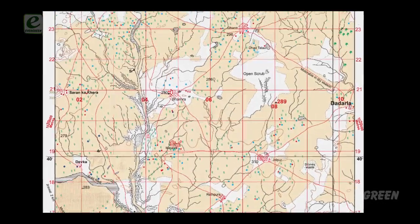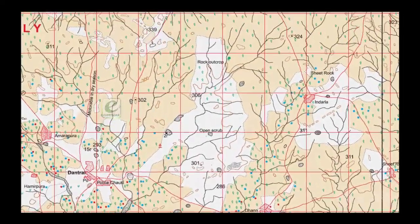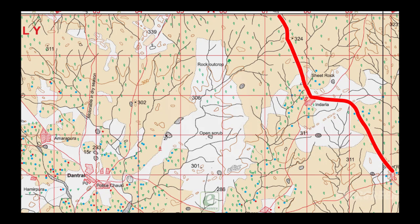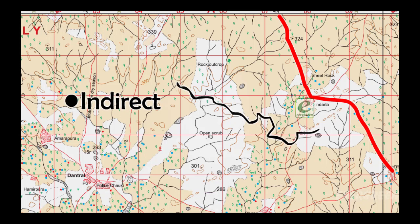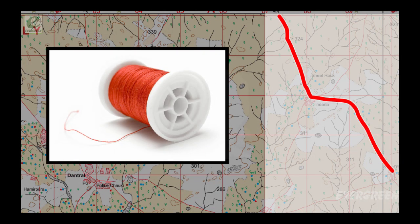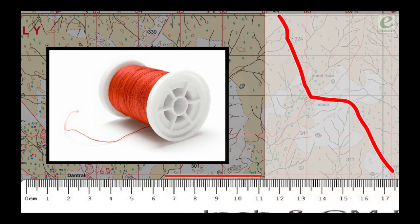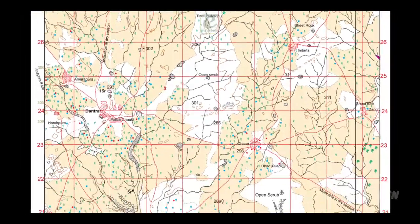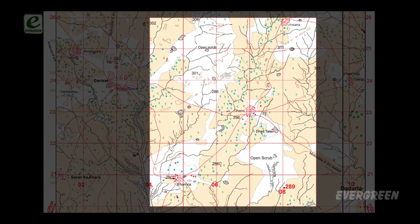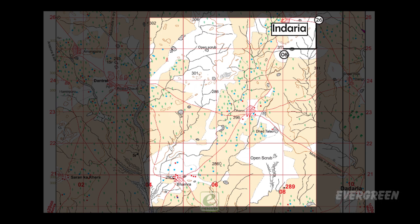Some difficulty arises in measuring irregular or curved lines, so we use the indirect method. To measure a curved line, take a piece of thread, mark the starting point with a pen, spread the thread along the line following each curve to the last point, then stretch the thread along the scale to get the length. For example, to measure the distance along the cart track between Indariya at grid 0826 and Bhamra at grid 0521.